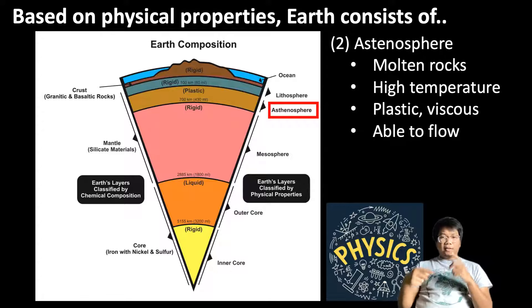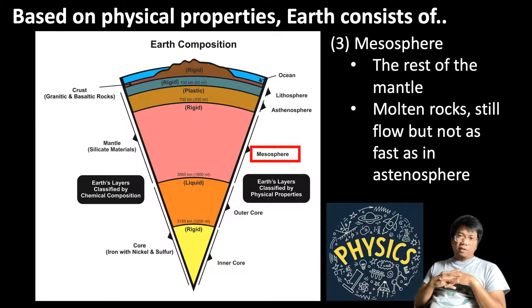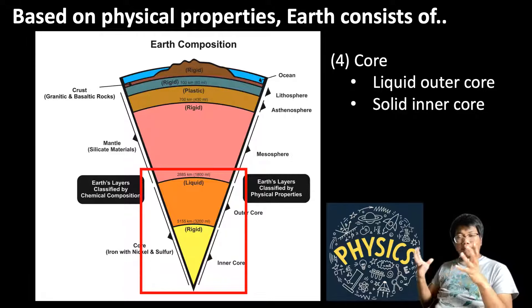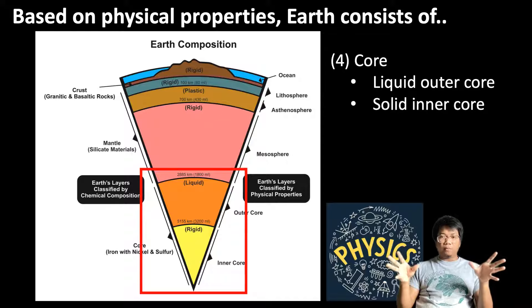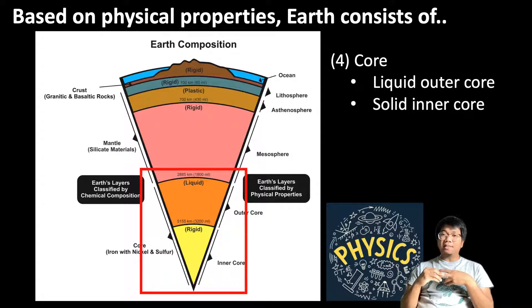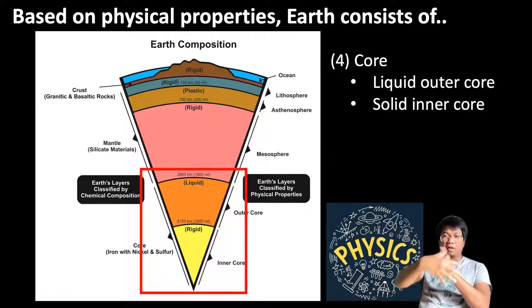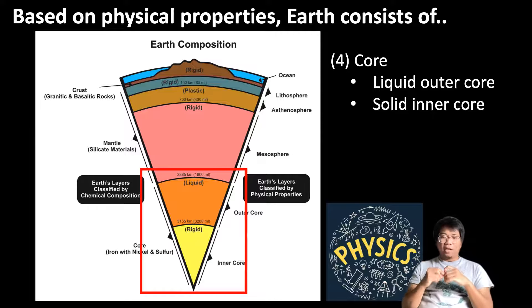Right underneath the asthenosphere, we have the third layer called the mesosphere, which is just the rest of the mantle. It still consists of molten rocks and is able to flow, but not as well as in the asthenosphere. The last one is the core. Even though compositionally the core mostly consists of iron, nickel, and other metal elements, physically we can subdivide the Earth's core into two parts: the liquid outer core and the solid inner core. This concept will be very relevant when we talk about the Earth's magnetic field in the next video.